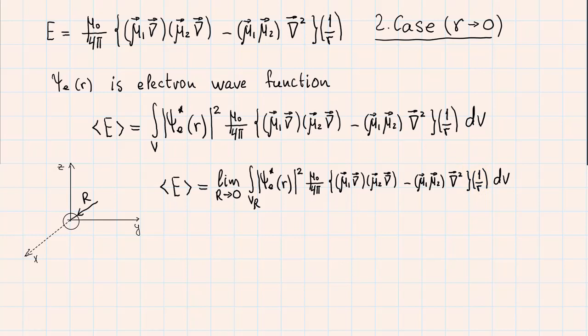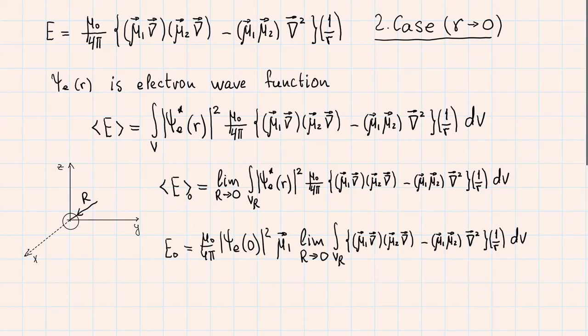I will briefly show you how it can be calculated. First of all, since we reduce the integration volume to zero point, we can pull out the electron wave function of the integral and take its value at zero point. In this way we obtain this expression. This integral can be calculated by substituting volume integration by an integration over the sphere surface, which is well known in vector calculus. I will skip the details of this integration and write the final result.